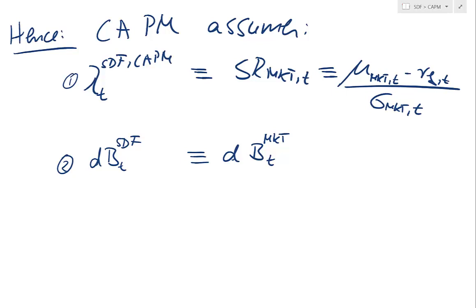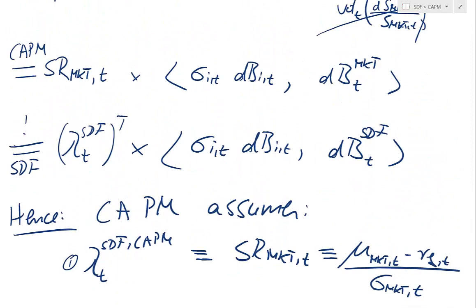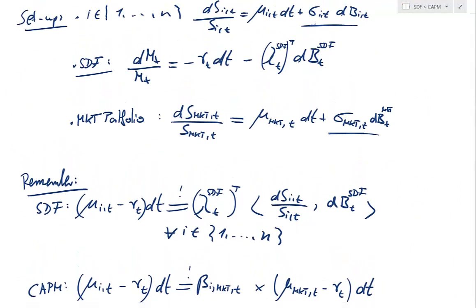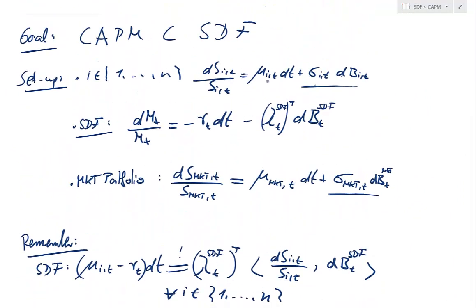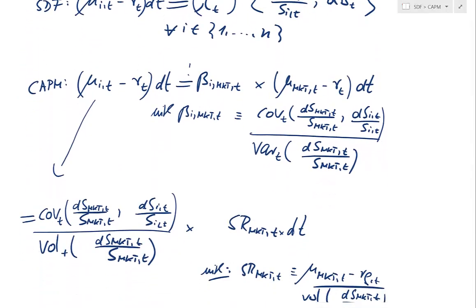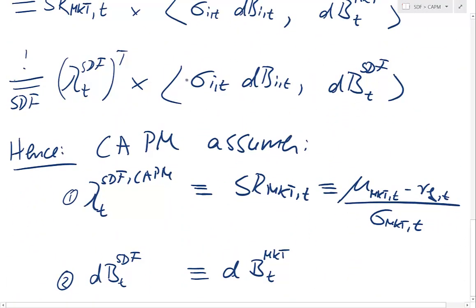We can therefore say that the risk premium of a firm — mu_i,t — equals the SDF notion of market price of risk times the co-movement of the instrument with the SDF. In the CAPM, that market price of risk is just the Sharpe ratio of the market, while the amount of risk is the instantaneous covariation.